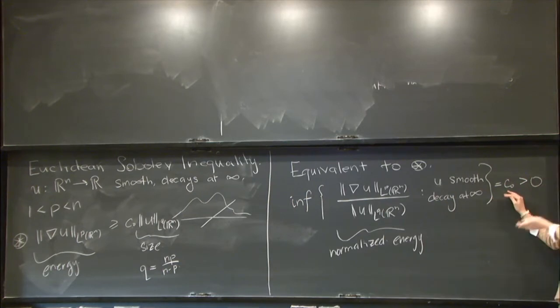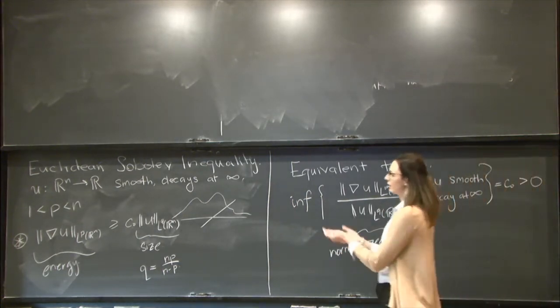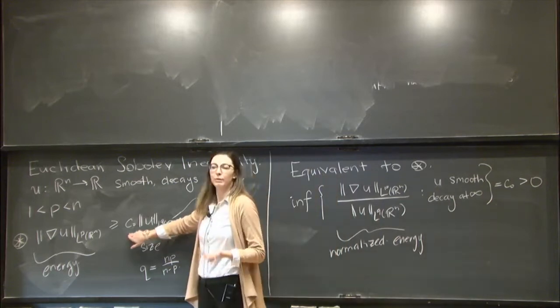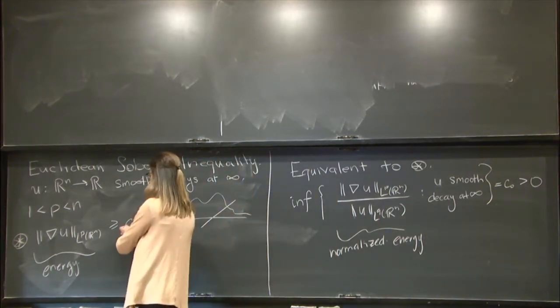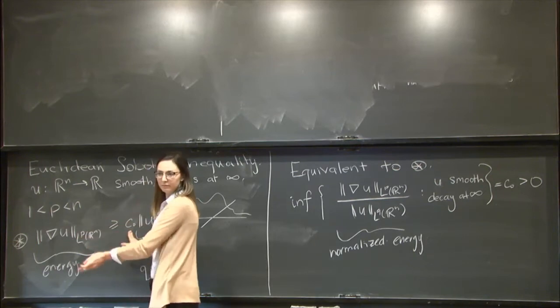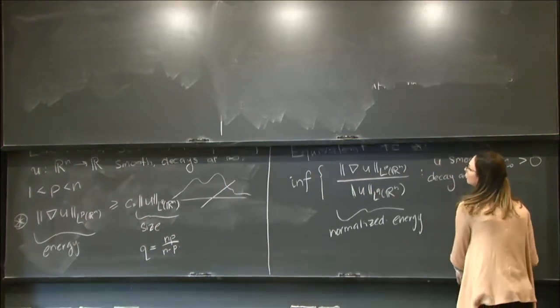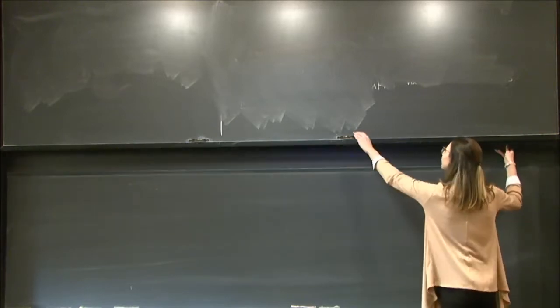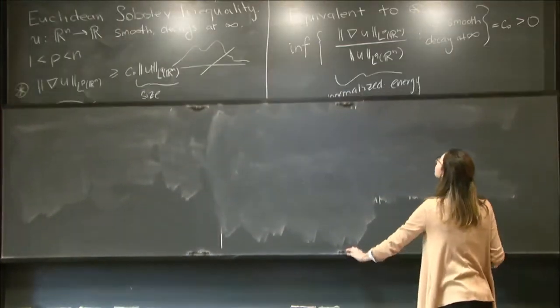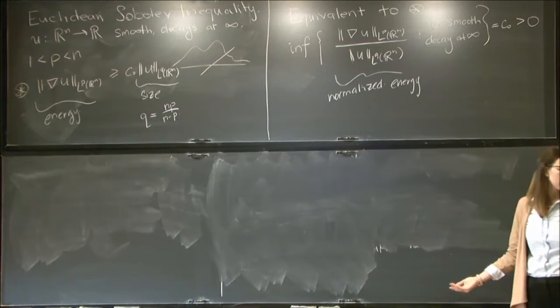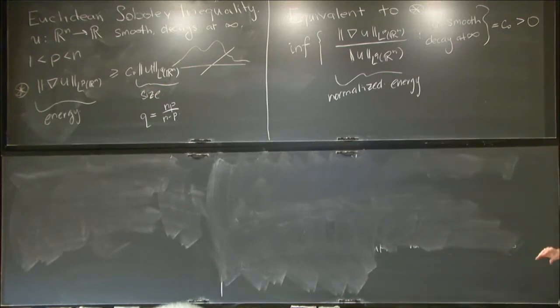If I define the best constant in this way to be the infimum value, then over here on the side of the inequality, this is the best possible constant. That's to say if I try to replace this constant with C plus epsilon, then the inequality is false.